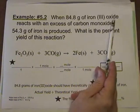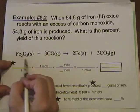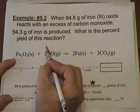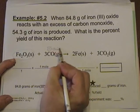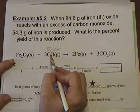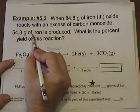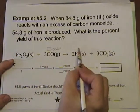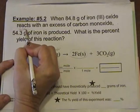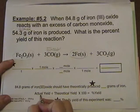It says when 84.8 grams of iron III oxide, which is this right here, reacts with an excess of carbon monoxide, so this is our excess, we're not really too excited about this because we know that they had too much of this anyway. They did produce 54.3 grams of iron.